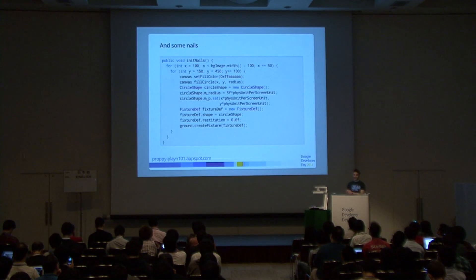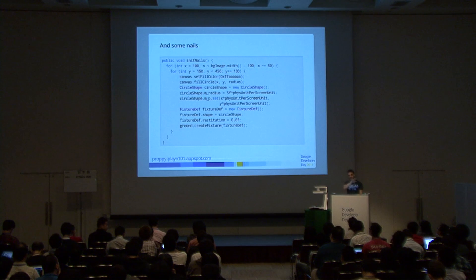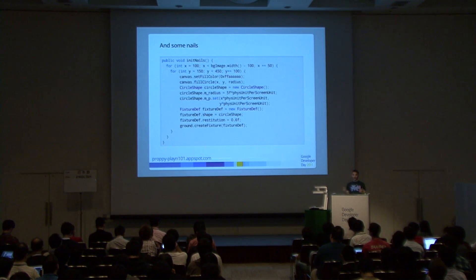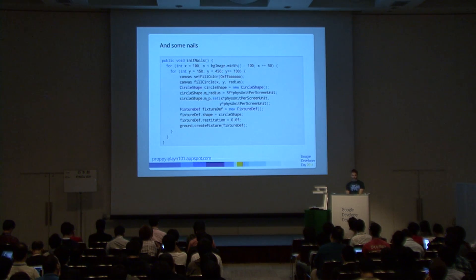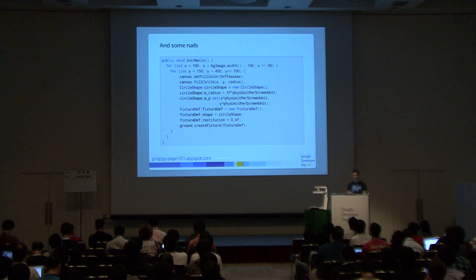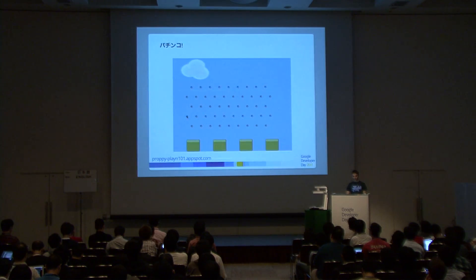Next we add nails across the screen — small circles the balls collide with. We draw the nails on the same canvas used for the background, associating a circle shape with a small radius. We also define restitution so balls bounce when they hit a nail. Now we have something like a pachinko game.